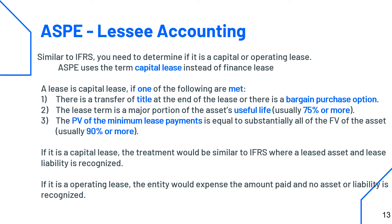The criteria for a capital lease — you only need to meet one. The first is that there will be a title transfer by the end of the lease or there is a bargain purchase option that is very likely to occur. The second is that the lease term is a major portion of the asset's useful life — in ASPE, this is specifically 75% or more. The third is that the present value of minimum lease payments equals substantially all of the fair value, which ASPE specifies as 90% or more. Unlike IFRS, these are not based on judgment: if you have 74% of the useful life, the second criteria is not met.